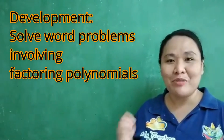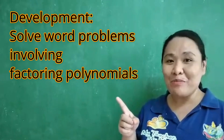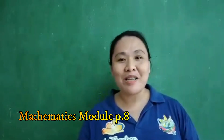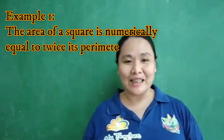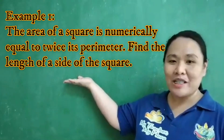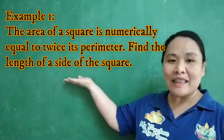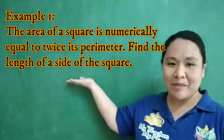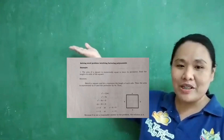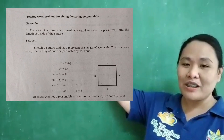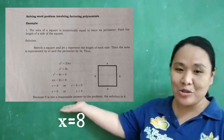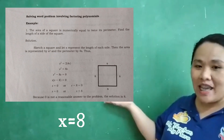Let's go to our lesson for today: how to solve word problems involving factoring polynomials. Can you open your math module on page number 8? Let's have some examples. Example number 1: The area of a square is numerically equal to twice its perimeter. Find the length of a side of the square. We have here the solutions on your math module, since x squared is equal to 2 times the quantity 4s, since the square has 4 sides. We can now have the solutions, and we get x equals 8.